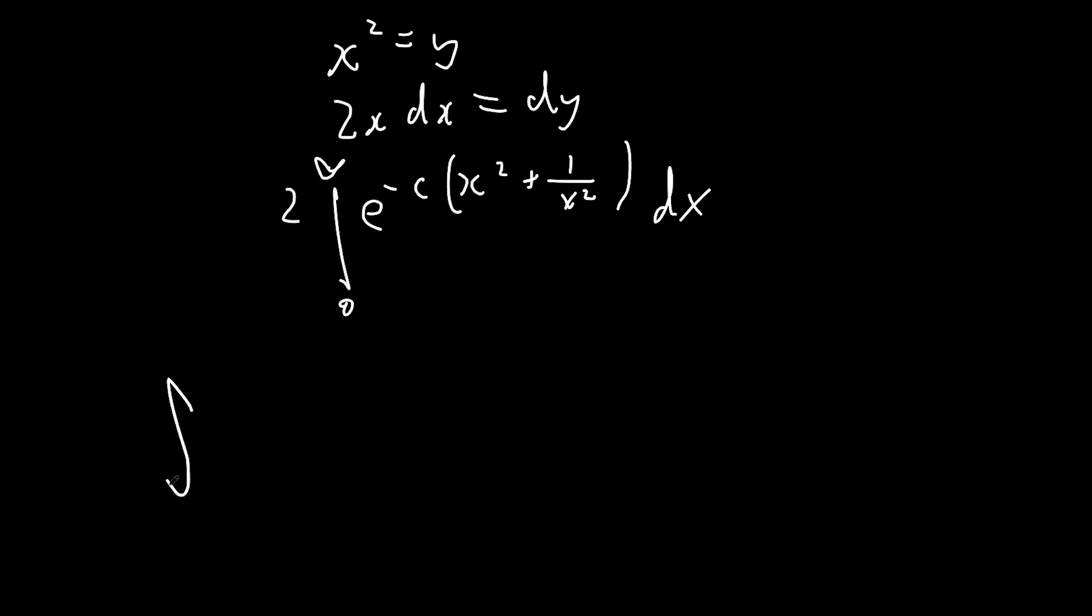It's gonna be: integral between minus infinity and infinity of f of (x minus 1 over x) dx equals integral from minus infinity and infinity of f of x dx.